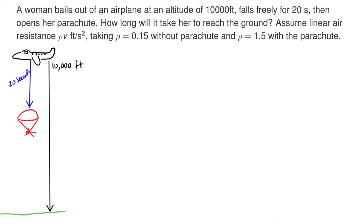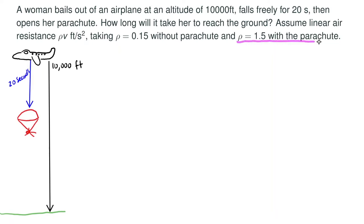Here we're going to assume linear air resistance, rho times velocity, feet per second squared. Whenever she does not have the parachute, rho is 0.15. And then once the parachute is being used, rho is 1.5.